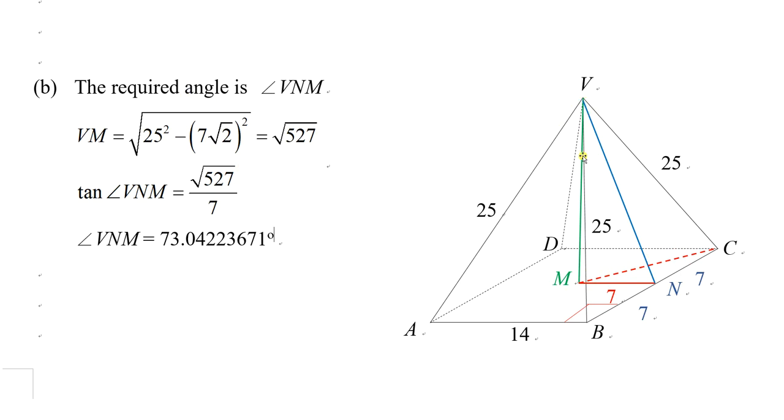The green line is root 527. Hence we can use tangent to find angle VNM: root 527 over the red solid line 7. So angle VNM is 73.04 degrees.